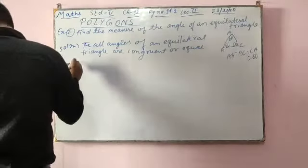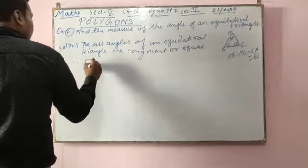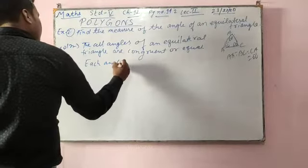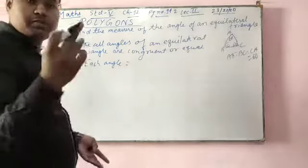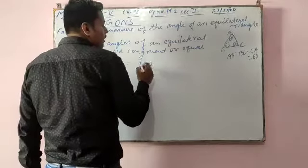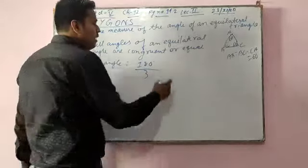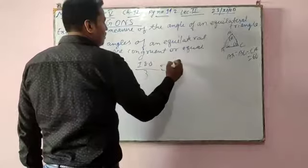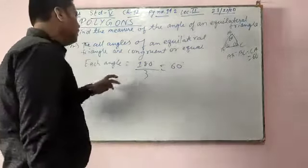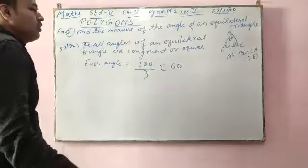Therefore, each angle is equal to: the sum of a triangle is 180 degrees, and there are three angles, so divide 180 by 3. You will find 60 degrees. It means each angle will be 60 degrees. My answer will be 60 degrees.